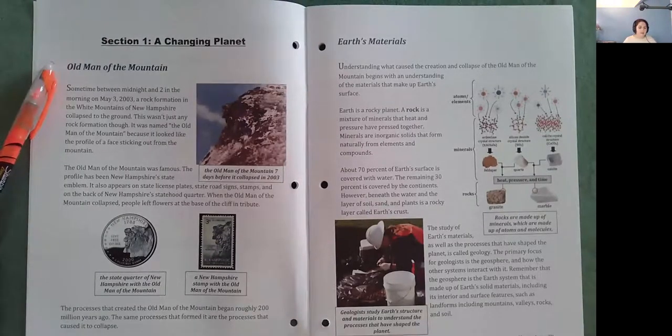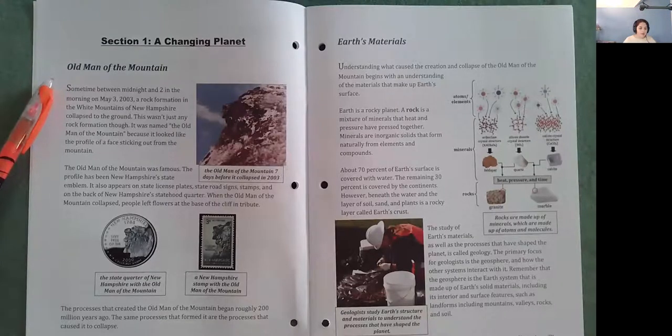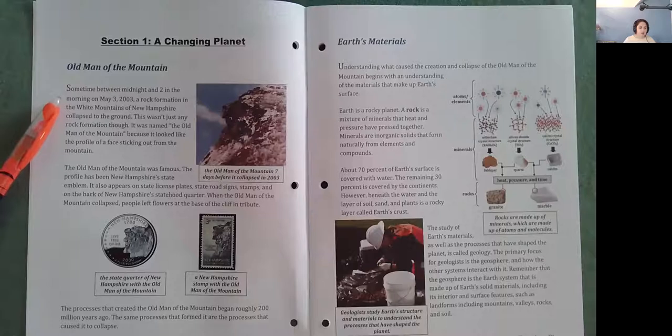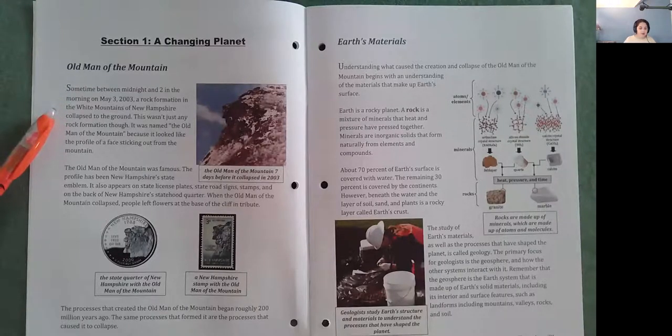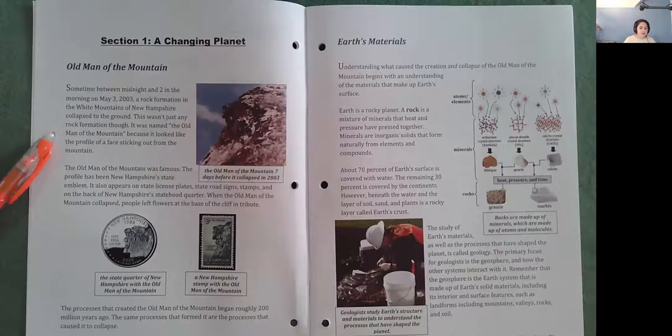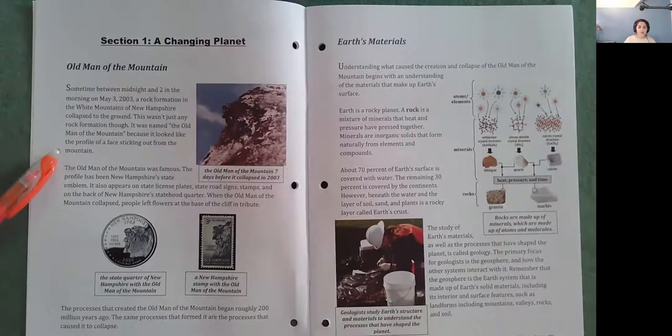Old Man of the Mountain. Sometime between midnight and 2 in the morning on May 3, 2003, a rock formation in the White Mountains of New Hampshire collapsed to the ground. This wasn't just any rock formation, though. It was named the Old Man of the Mountain because it looked like the profile of a face sticking out from the mountain.